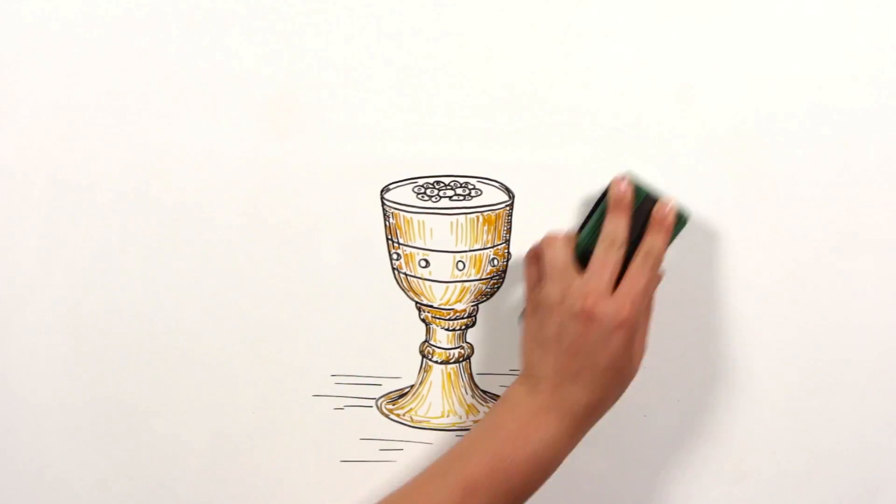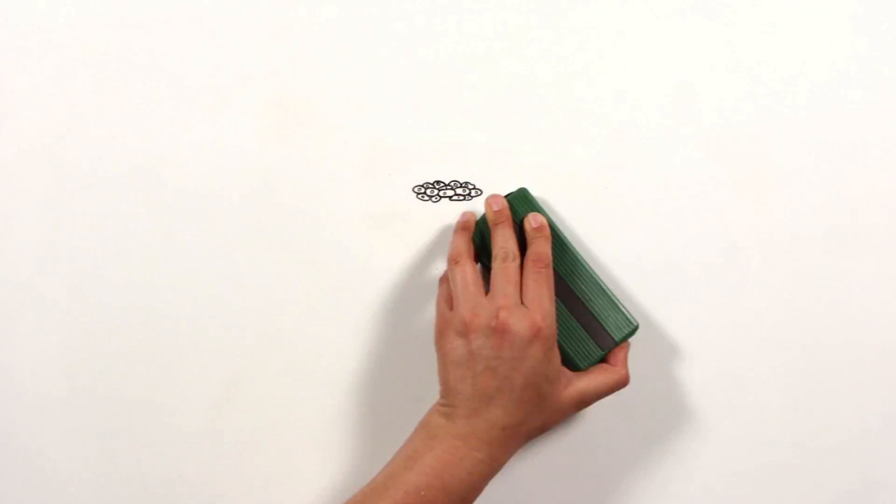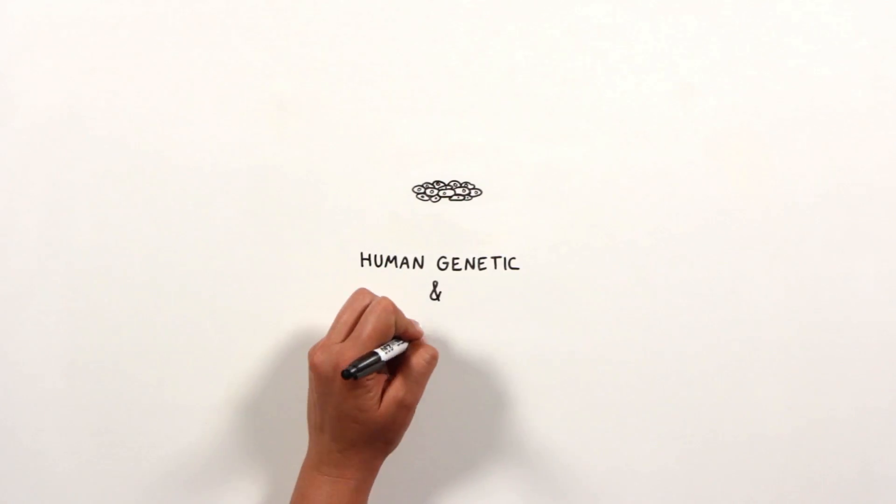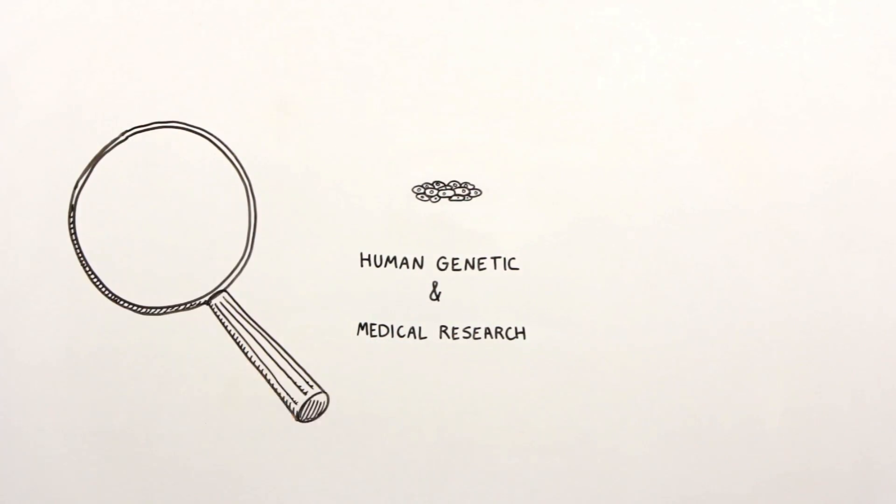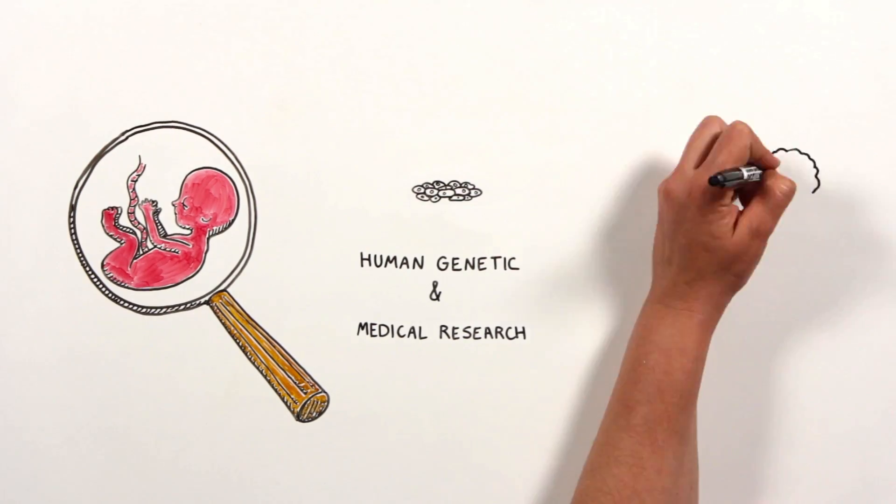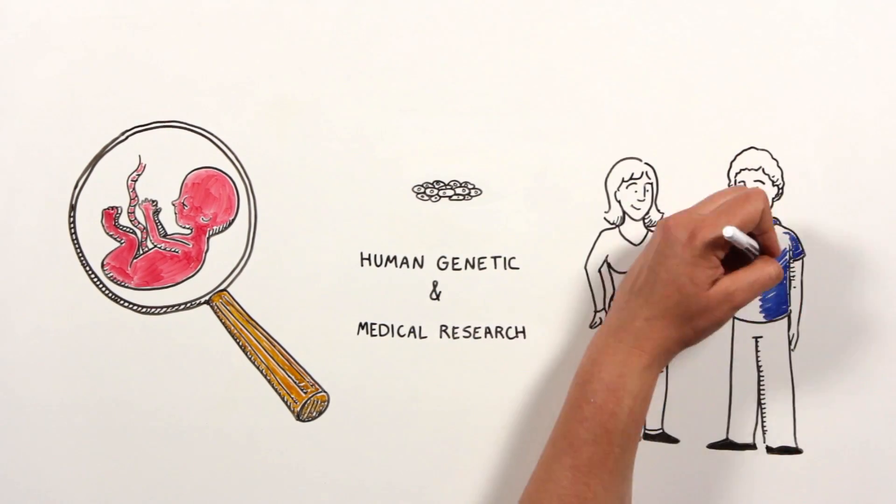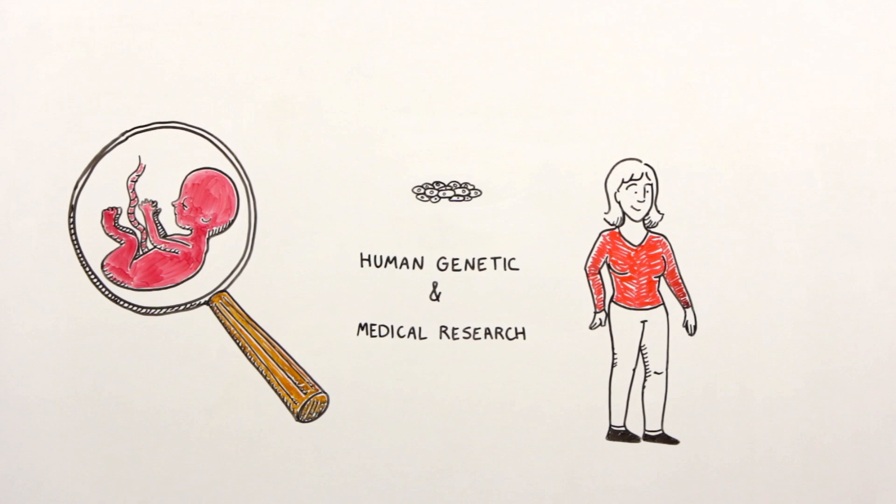This new type of human stem cells will have a profound impact on human genetic and medical research. Haploid human cells provide a novel tool to better understand human development and the reason why we reproduce sexually, instead of from a single parent.